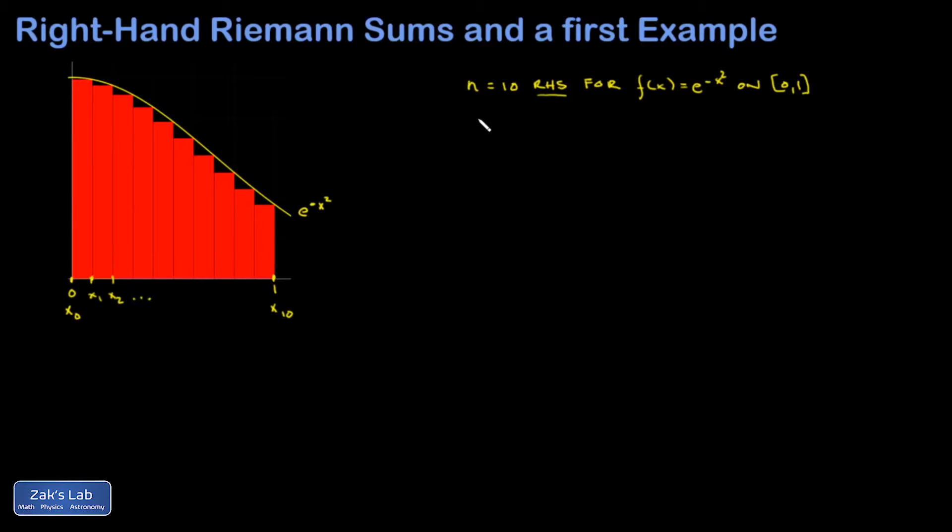The first thing we want to do is get an expression for the width of each of these rectangles. That's going to be the interval width divided by how many subintervals we chopped into, so 1 over 10. Then we want to get an expression for the ith cut points, and that would be the starting point plus i steps to the right, so i times 1 over 10.